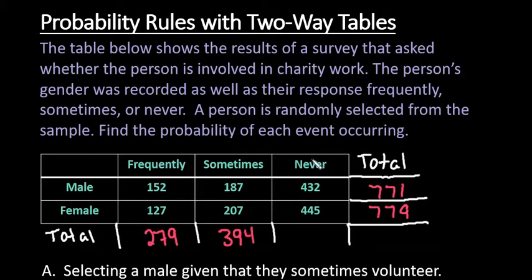187 plus 207 gives us a total of 394 responded sometimes. The never column gives us 877. To find the total total, I can either take the row totals and add them together or the column totals. 771 plus 779 gives me 1550, or I can do 279 plus 394 plus 877. Remember with probabilities we have to know totals.